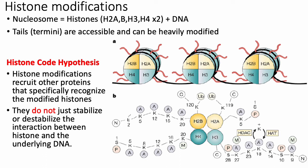It's worth mentioning the histone code hypothesis. When histone modifications were first being studied, it wasn't really clear whether they were playing a direct role in changing gene regulation or whether they were simply there to change how often nucleosomes formed or were stably bound to DNA. The histone code hypothesis basically hypothesizes that histone modifications are actually an active part of the gene regulation system — different modifications are actively recognized by certain regulators, which then change their behavior based on those histone modifications, rather than just passively changing DNA accessibility.